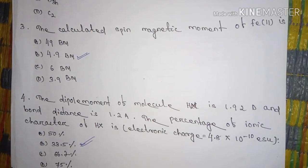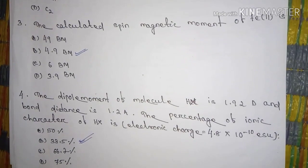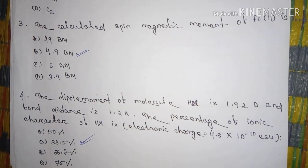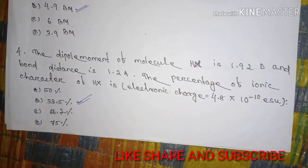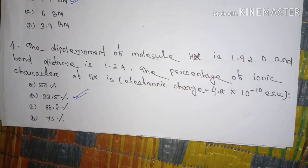Question number three is the calculated spin magnetic momentum of Fe plus 2 ion is 4.9 BM. Answer is 4.9 BM.